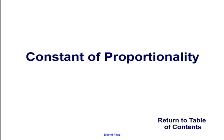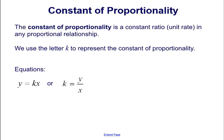Constant of Proportionality. The constant of proportionality is a constant ratio or unit rate in any proportional relationship. We use the letter K to represent the constant of proportionality.